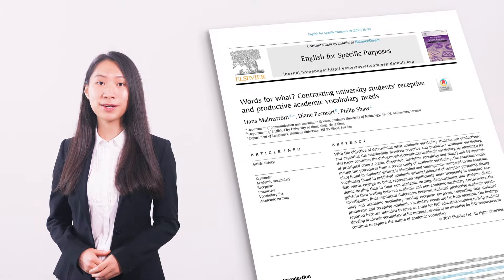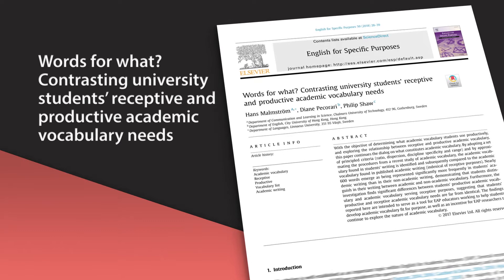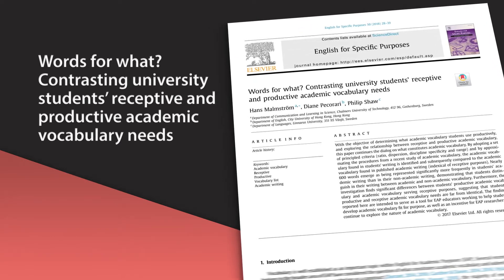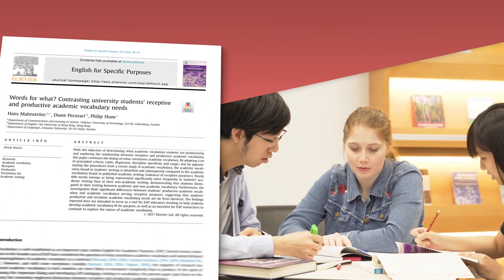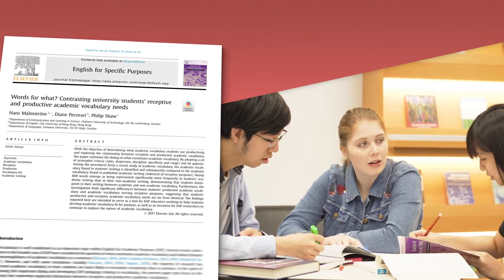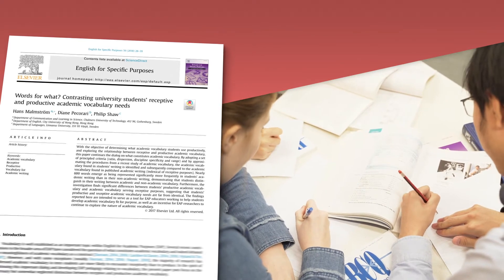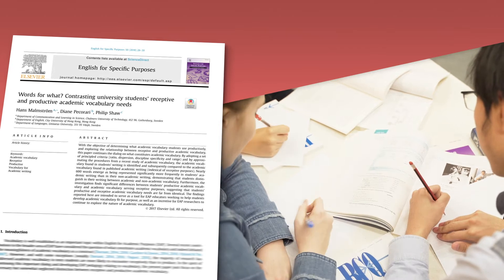In this episode we'll look at examples from this article: 'Words for What? Contrasting University Students' Receptive and Productive Academic Vocabulary Needs.' The purpose of this article is to understand the range of academic vocabulary which students need for success at university. Receptive means being able to understand words when reading or listening. Productive means being able to use words when speaking or writing. Even if you don't know much about the topic, you can understand the article if you use the right strategies.